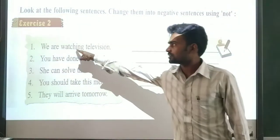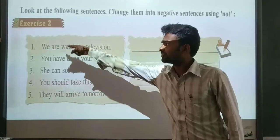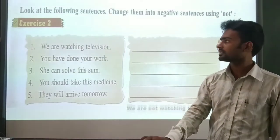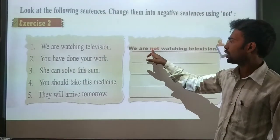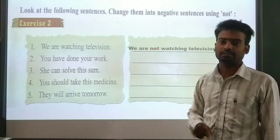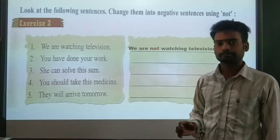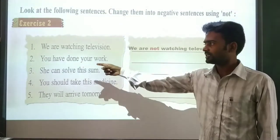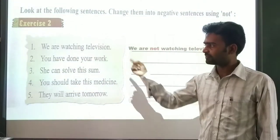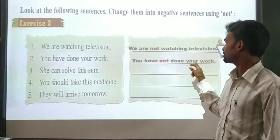We are not watching television - we only added 'not' before the main word, so it becomes a negative sentence. Next: 'You have done your work.' What is the main word? 'Done' is the main word. So before 'done', we add 'not' - 'You have not done your work.' Next: 'She can solve this sentence.' The main word is 'solve', so we say 'She cannot solve this sentence.'